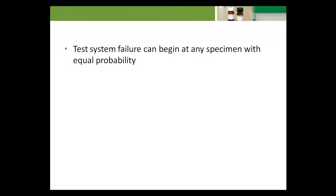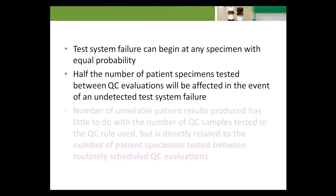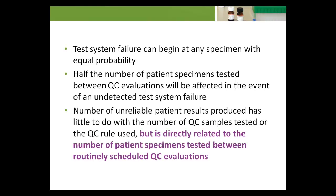If we consider that a test system failure can begin at any specimen with equal probability, then the expectation is that half the number of patient specimens tested between QC evaluations will be affected in the event of an undetected test system failure. In this case, the number of unreliable patient results produced has little to do with the number of QC samples tested or the QC rule used, but is directly related to the number of patient specimens tested between routinely scheduled QC evaluations.